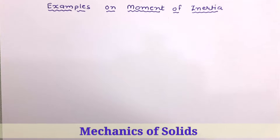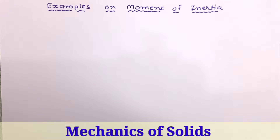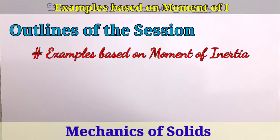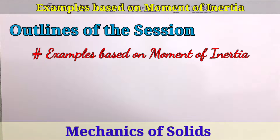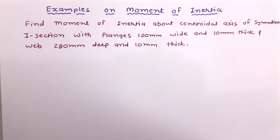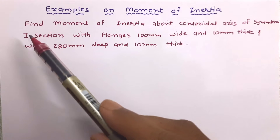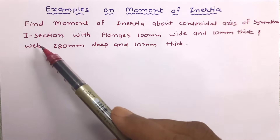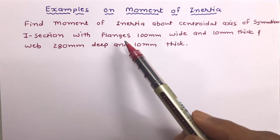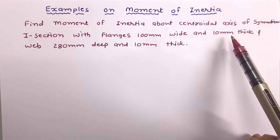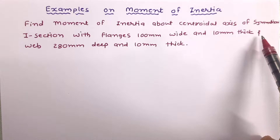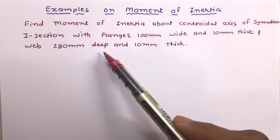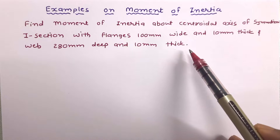Welcome to the lecture series of Mechanics of Solids. In this lecture, we are going to solve examples on moment of inertia of different shapes. The problem given: find the moment of inertia about the centroidal axis of a symmetrical I-section with flanges 100 mm wide and 10 mm thick, and a web 280 mm deep and 10 mm thick.